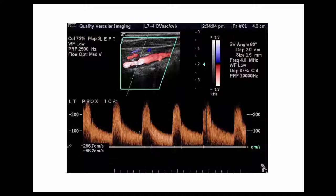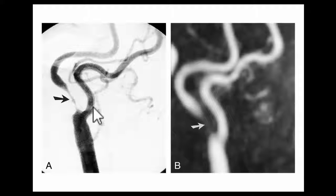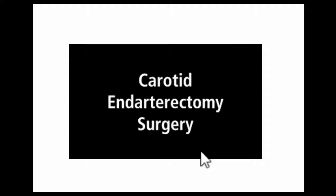When we see such dramatic Doppler ultrasound findings, the patient is referred for further imaging — either an angiogram, performed by placing catheters from the groin up into the neck, or a CT angiography or MRI. Here is an angiogram showing a critical narrowing, and here is an MRI example showing critical stenosis of the internal carotid artery at its origin.